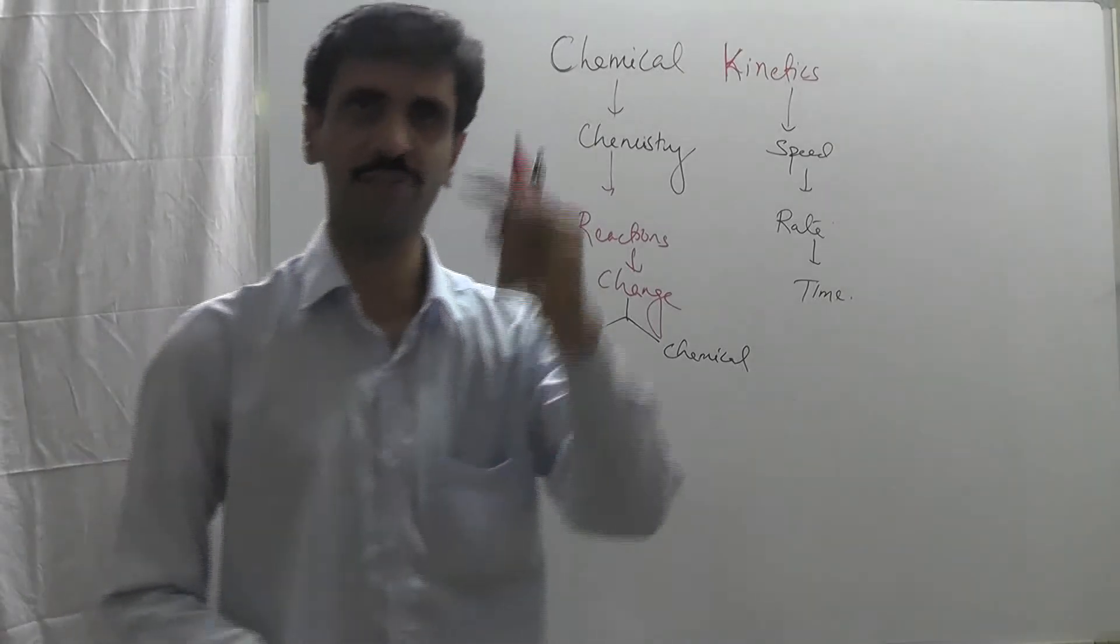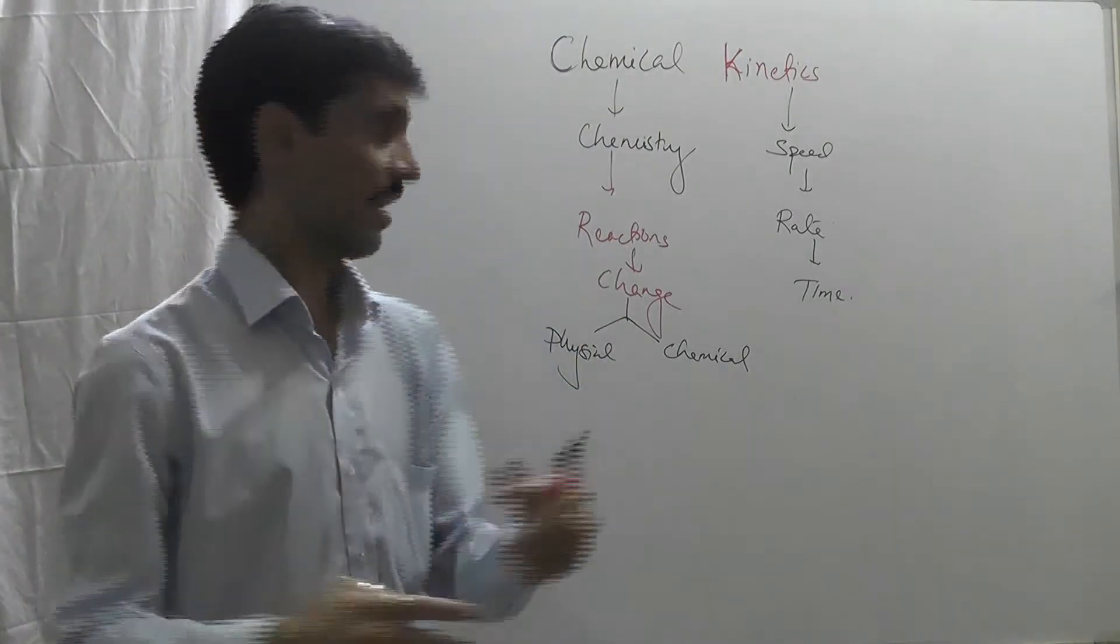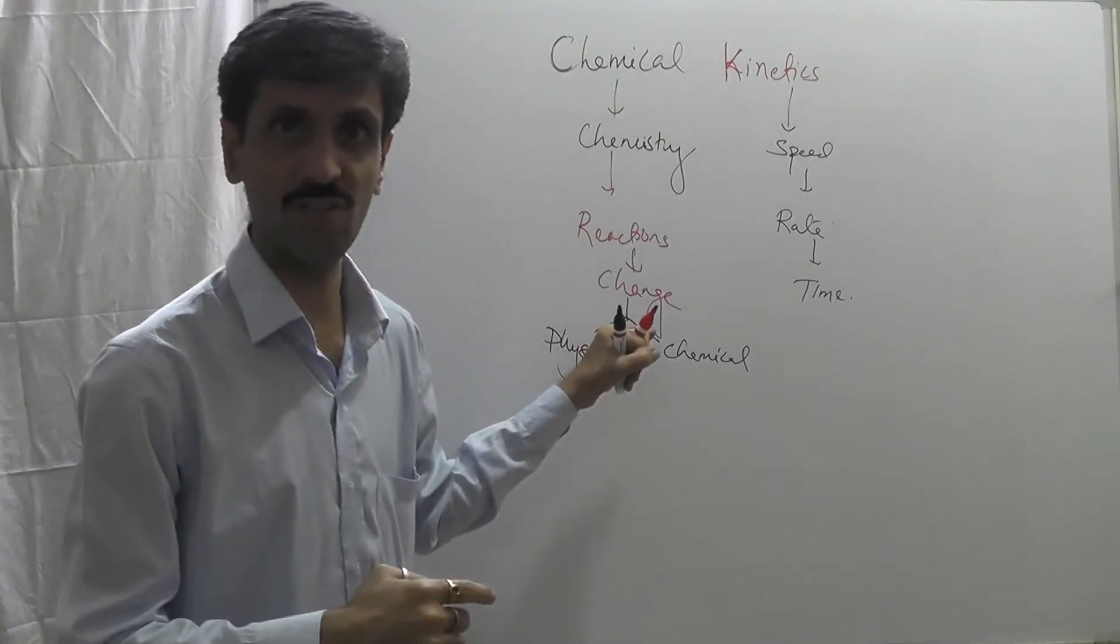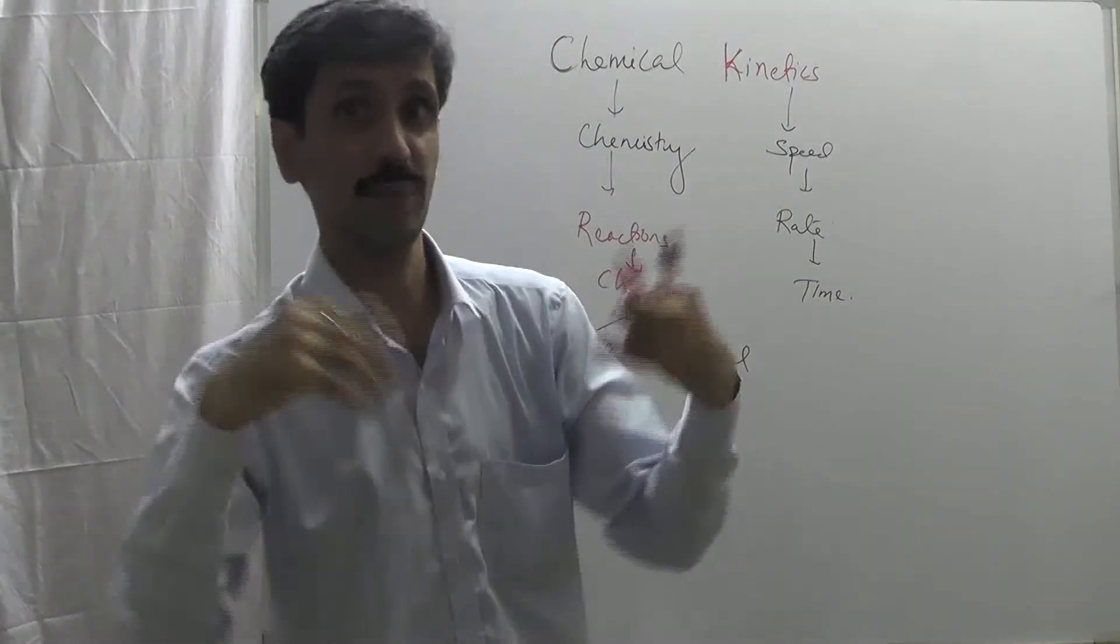Once again I repeat, chemical kinetics is a branch of chemistry which deals with the changes with respect to the reactions, but then it is being applied to the speed—the rate at which or the speed at which the reaction takes place.